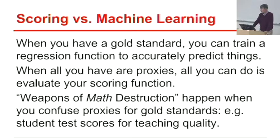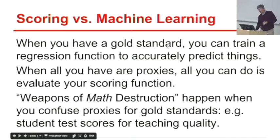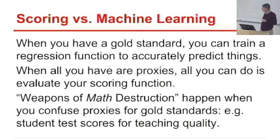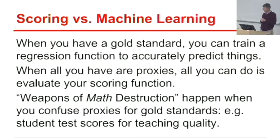If you have a gold standard, you can train a regression function. If all you have are proxies, you should train your scoring function and evaluate it — typically you'll find certain people who do badly by the proxy but look good by your measure. These are people you'd want to investigate to understand the difference. Sometimes you use the proxy for evaluation instead of for training.